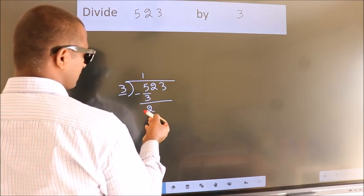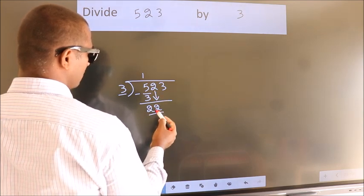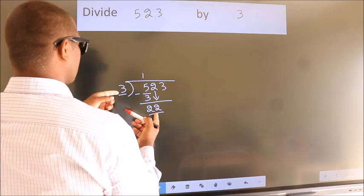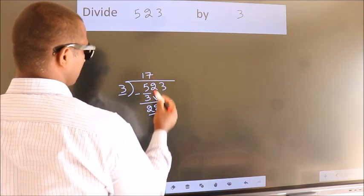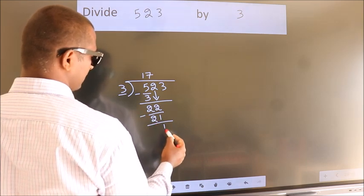After this, bring down the beside number. So, 2 down. So, 22. A number close to 22 in the 3 table is 3 7s 21. Now, we subtract. We get 1.